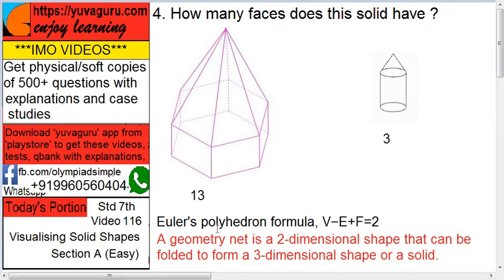There is also formula to this, that is called as Euler's formula. V minus E plus F equals to 2, means vertices minus edges plus faces equals to 2. You put in the figures over here, you will get the answer.